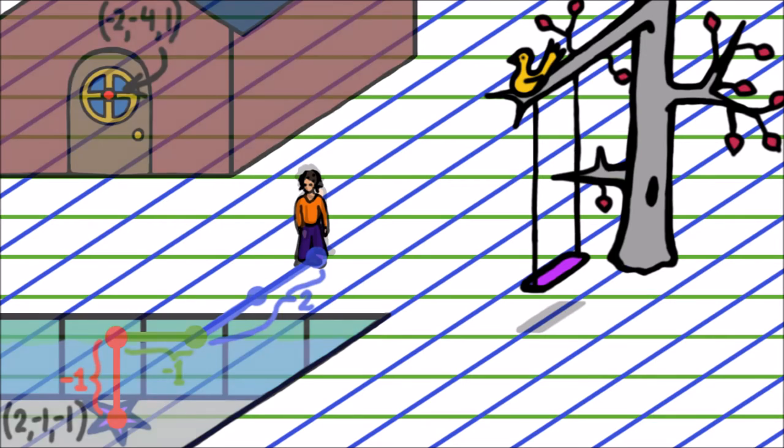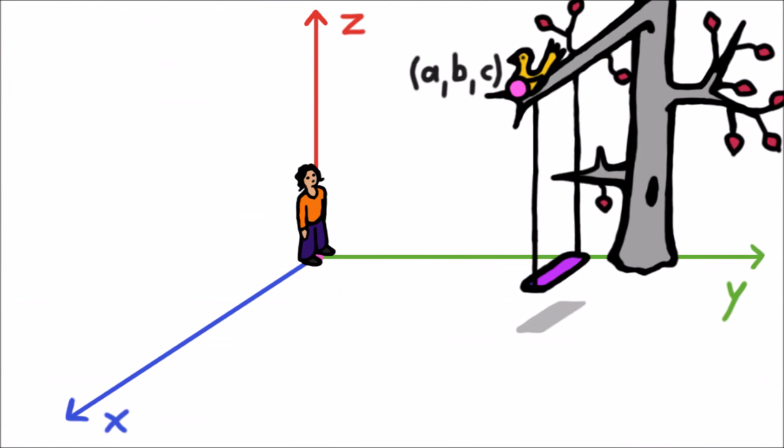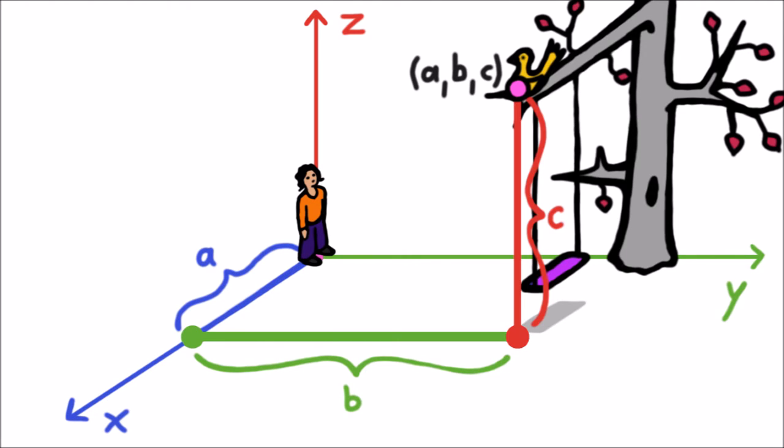So suppose we have a point in this world. Call it A, B, C. To get to this point, you start at the origin, move A units to the right, B units forward, and C units upwards. Let's assume these numbers are all positive to keep things simple for the moment.